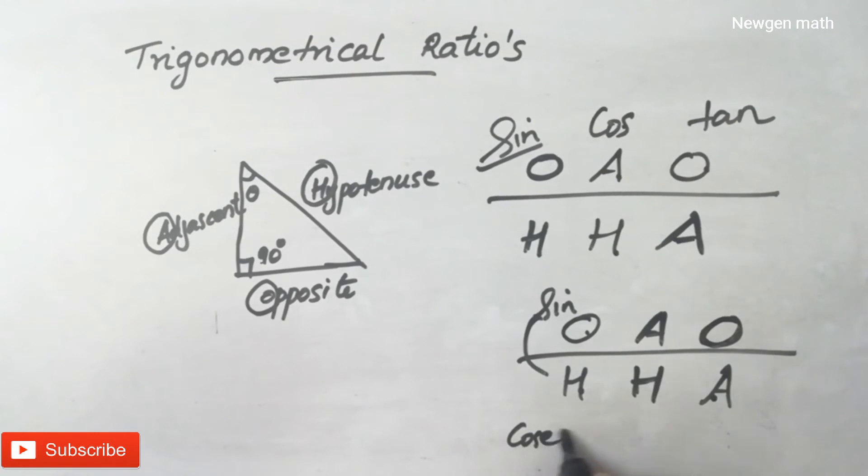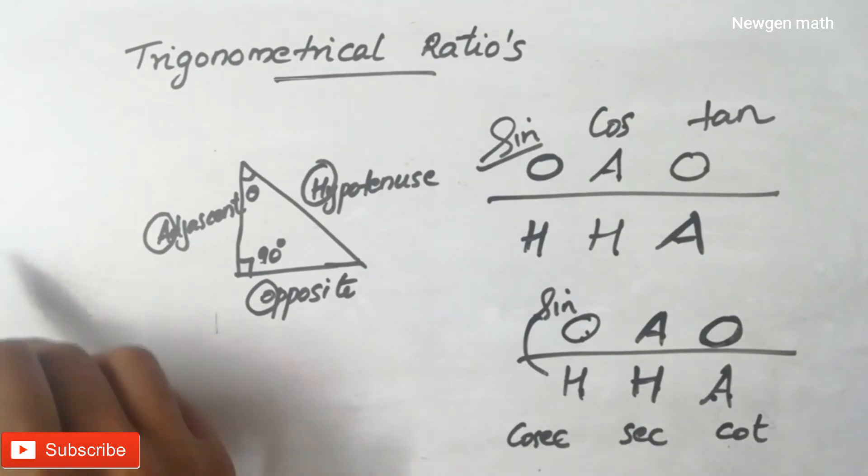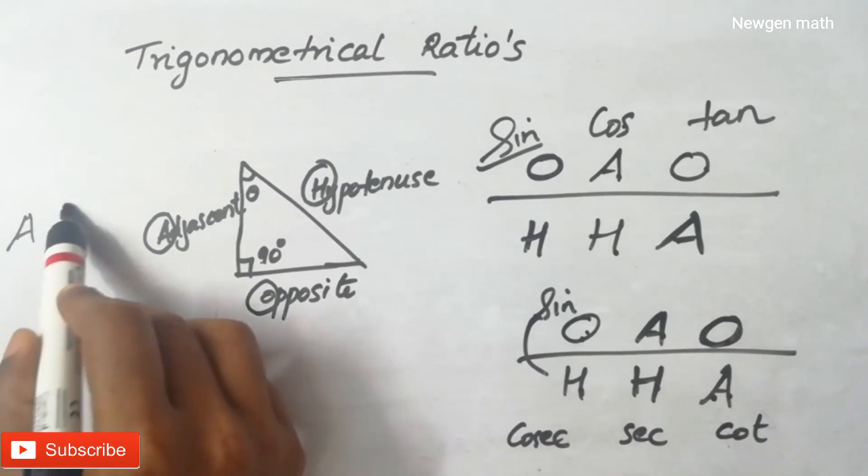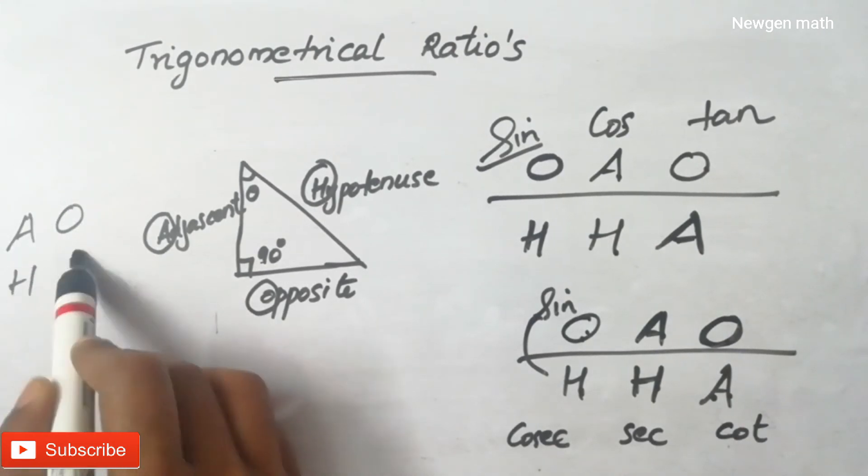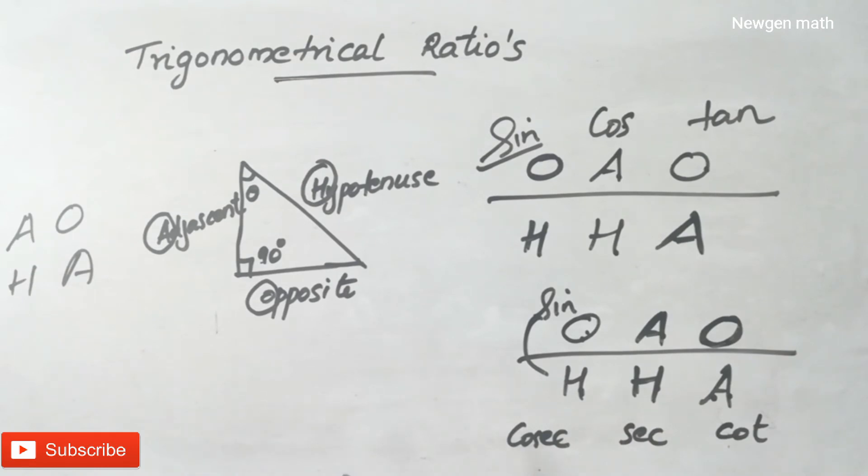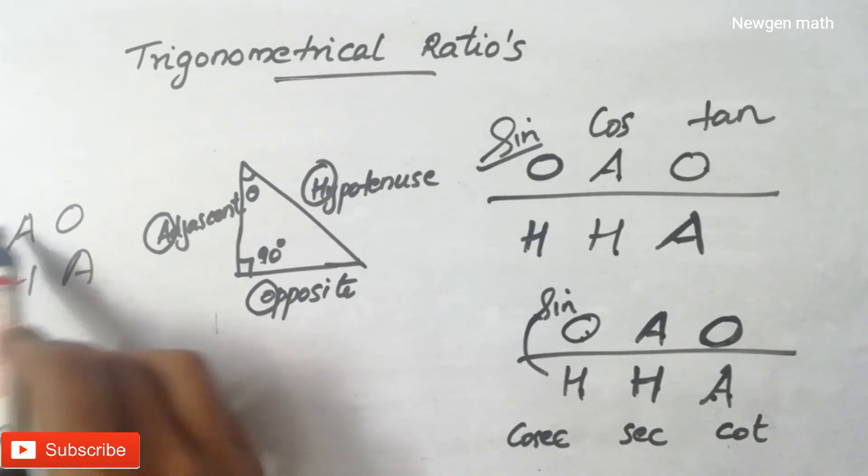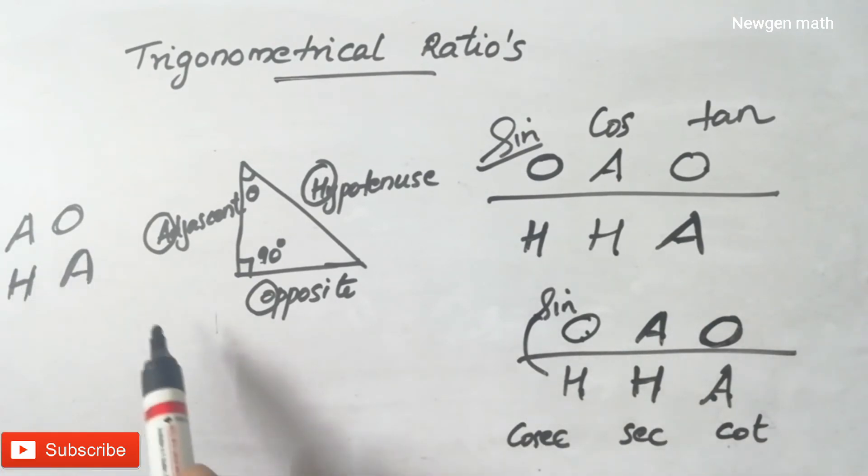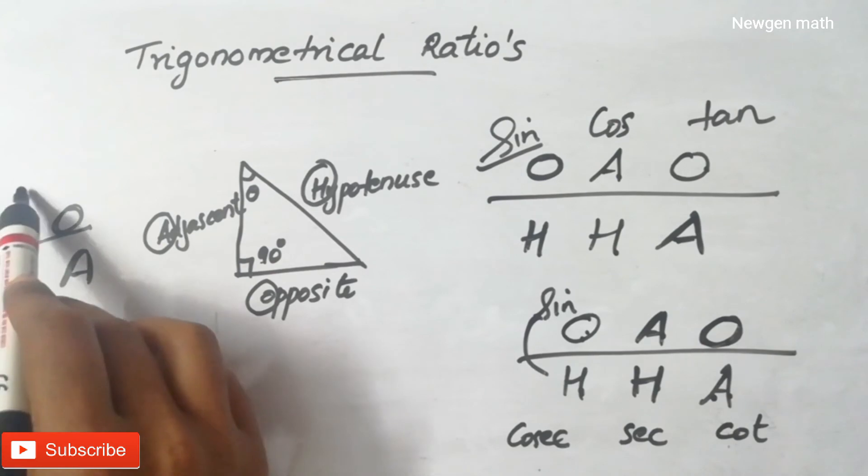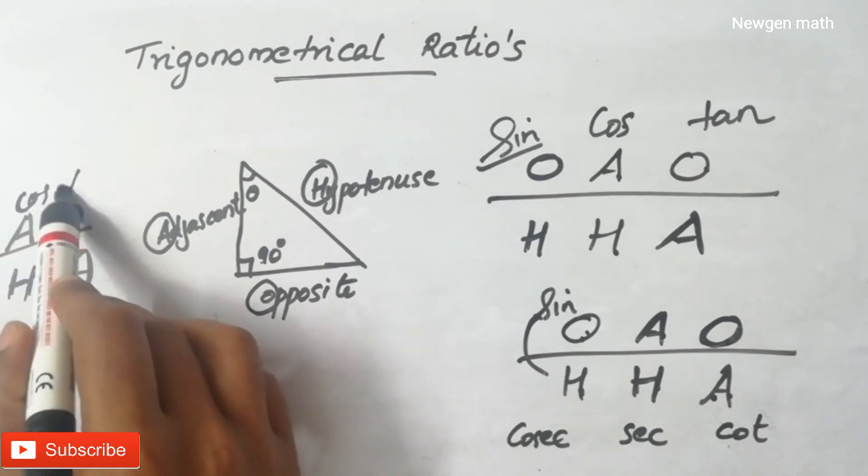Let's look at the detailed design. Let's start with the equation. O-A-O-H-H-A. This means three words. Now divide. This is the sine equation, cosine equation, and tangent.